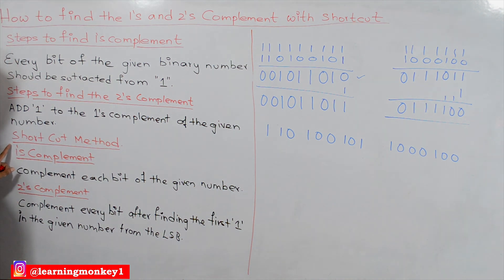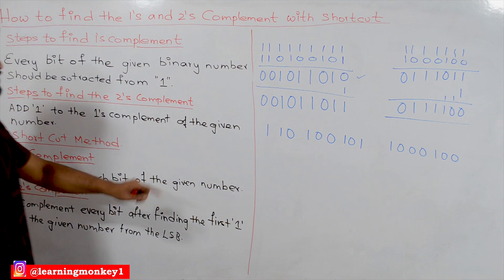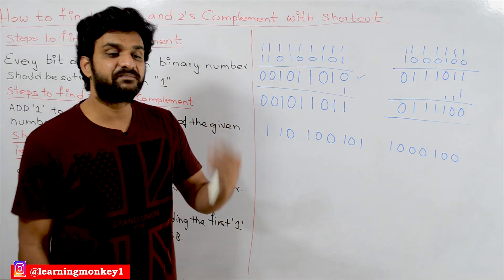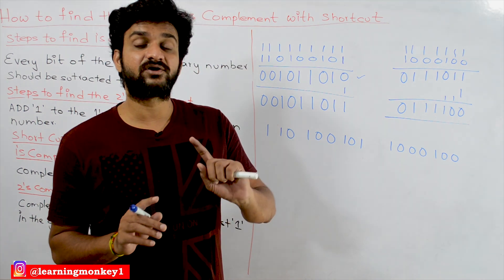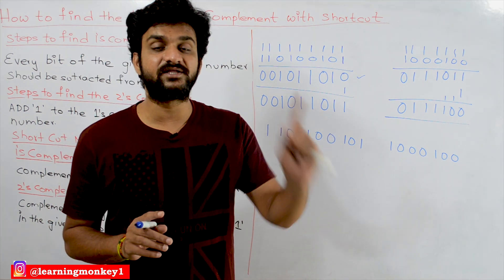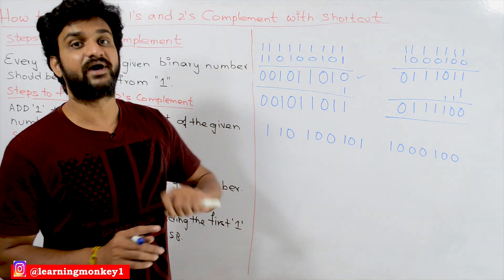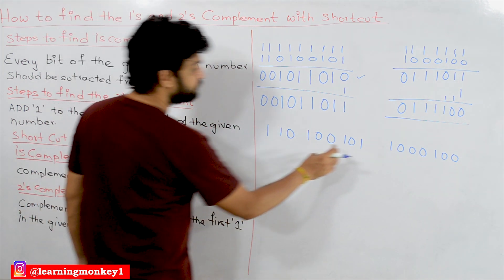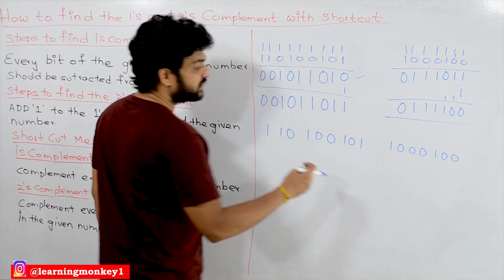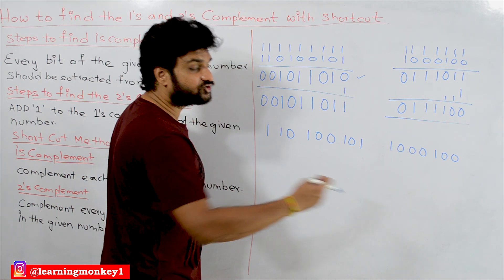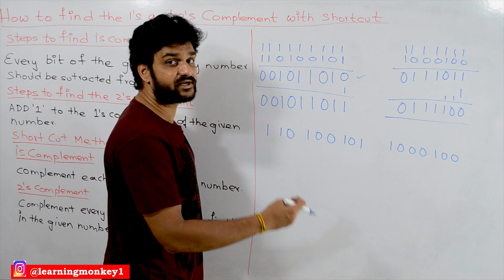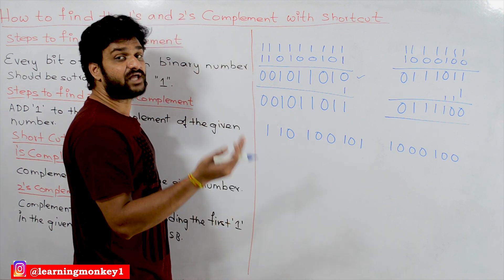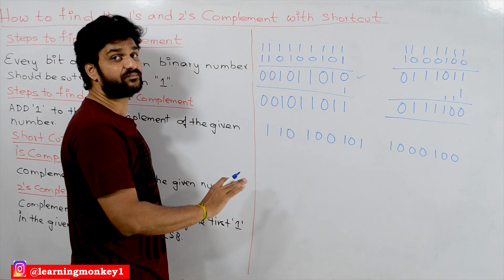The shortcut method for finding the ones complement is to complement each bit of the given number. Complementing a binary number means: the complement of 1 is 0, and the complement of 0 is 1. Wherever you find 1, change it to 0; wherever you find 0, change it to 1.